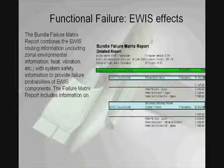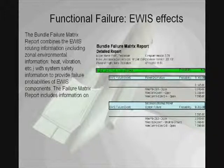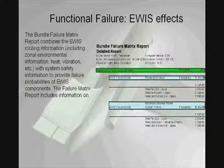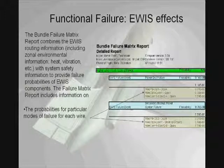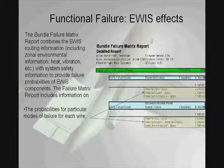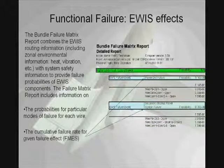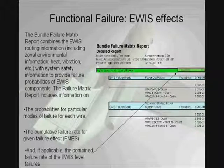The next step in the eWist failure function analysis is the bundle failure matrix report, which combines the eWist routing information — which includes information about heat, humidity, vibration, etc. — with the system information to provide the probabilities of eWist component failure. The failure matrix report includes information on the probabilities of failure for a particular wire, the mechanisms for the failure, the cumulative failure rate for each given failure effect, which can be used in the FMES, and if applicable, the combined failure rate of the eWist level failures.